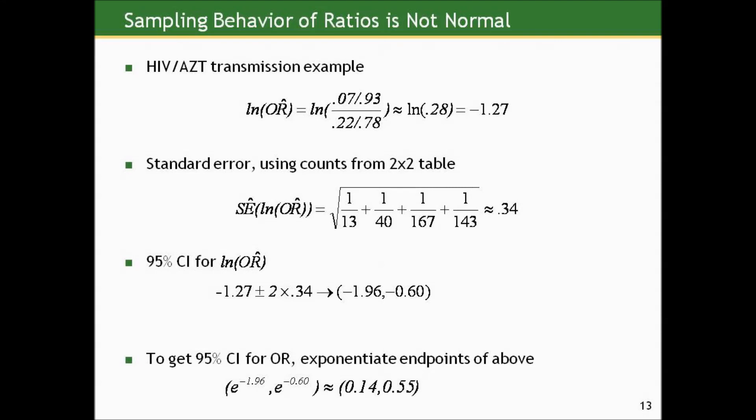So again in our HIV infant transmission example, the estimated odds ratio was about 0.28, the log of which is negative 1.27. The standard error using the counts from the 2x2 table in that formula I gave you turns out to be about 0.34. And the 95% confidence interval for the log of the odds ratio is that negative 1.27, the estimate, plus or minus 2 times that estimated standard error of 0.34, gives us a 95% confidence interval for negative 1.96 to negative 0.60. And if we exponentiate those endpoints, we get a confidence interval for the odds ratio of about 0.14 to 0.55.